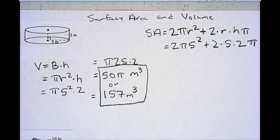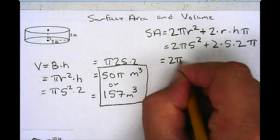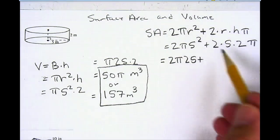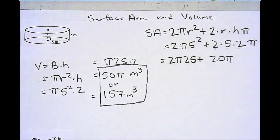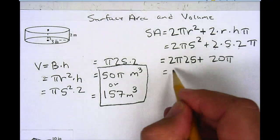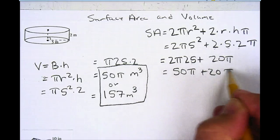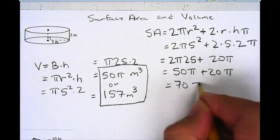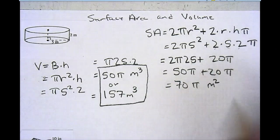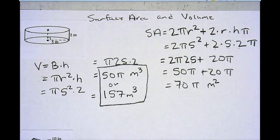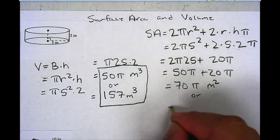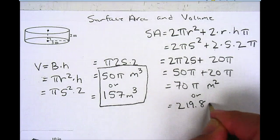Now I can simplify. I take 5 squared, which is 25, so it's really 2 times pi times 25 plus 2 times 5 times 2. The second term: 2 times 5 is 10, times 2 is 20 pi. And the first term: 2 times 25 is 50, so I have 50 pi plus 20 pi, giving a total of 70 pi. If I want to leave it in terms of pi, it's 70 pi meters squared. For an approximation, I take 70 times 3.14 and get 219.8 meters squared.